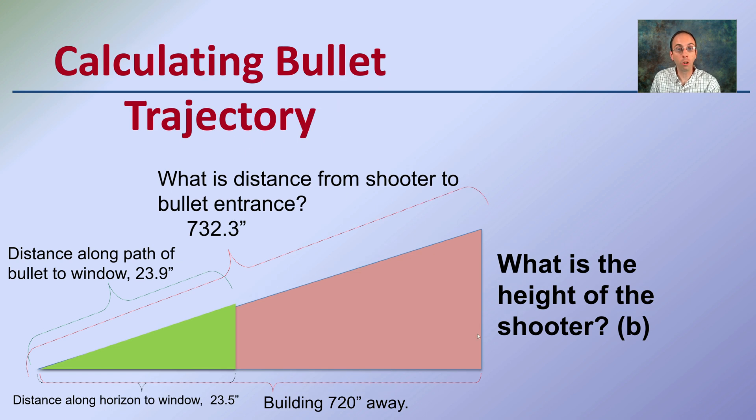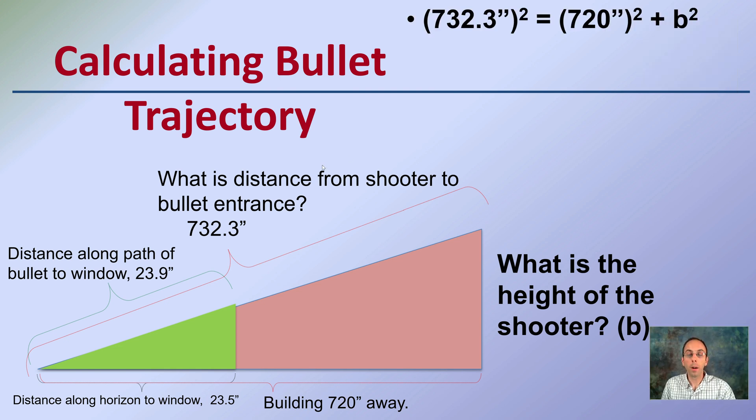Now calculating bullet trajectory. What's the height of the shooter? Well, here's our distance now. Here's our building distance. We're going to simply calculate a squared plus b squared equals c squared. What we're looking to find is b squared. So we've got 720 squared plus b squared is going to equal 732.3 squared. So let's calculate that out.